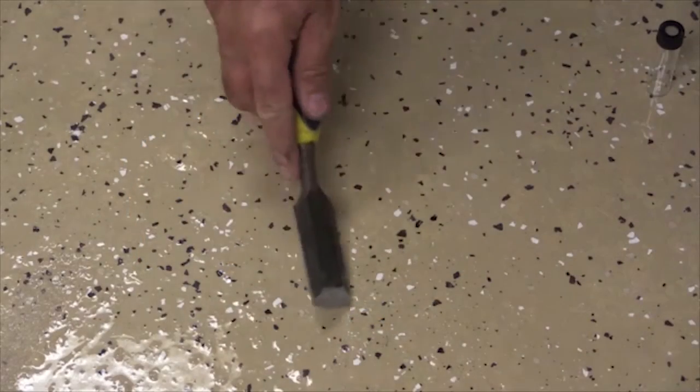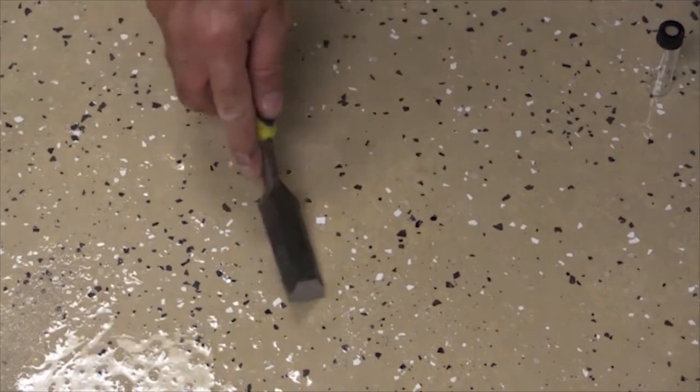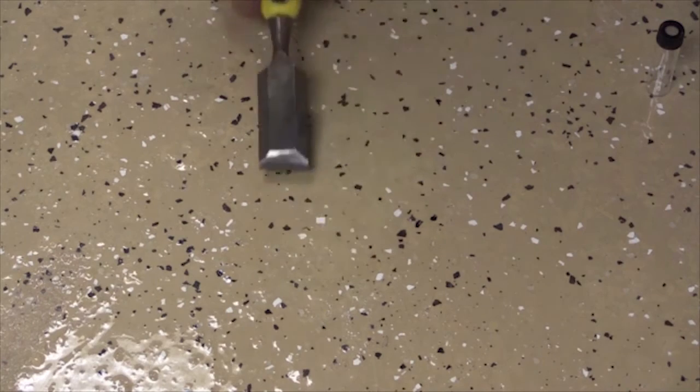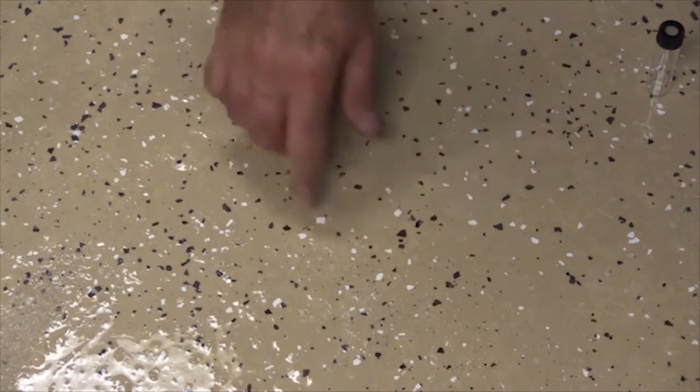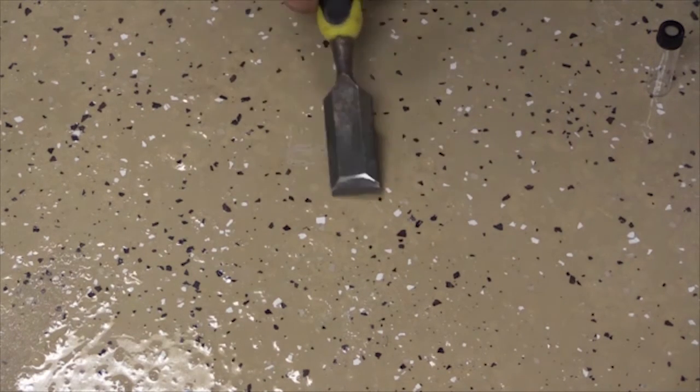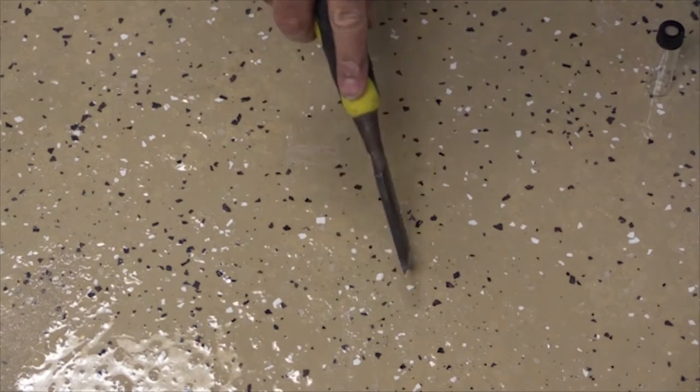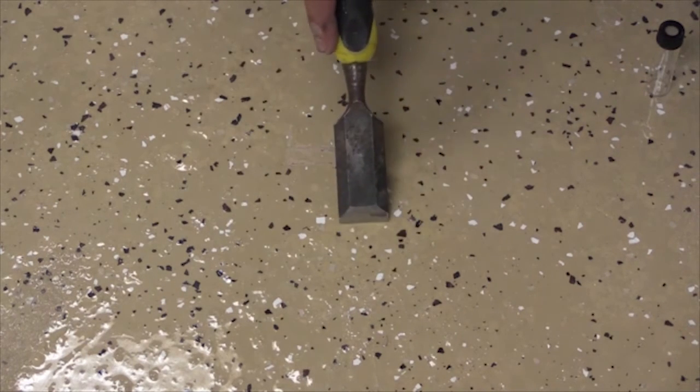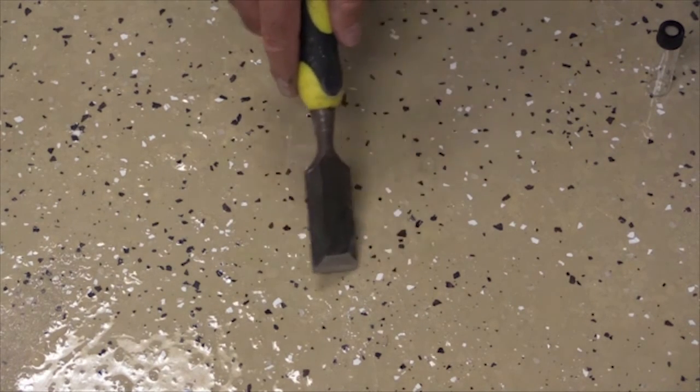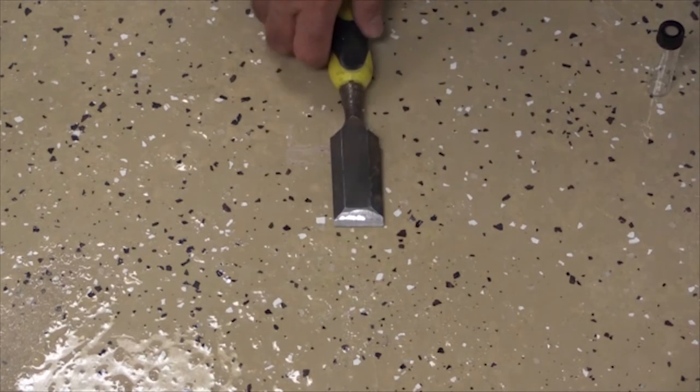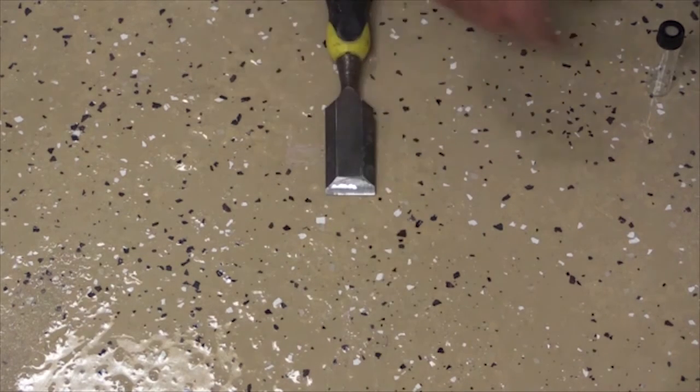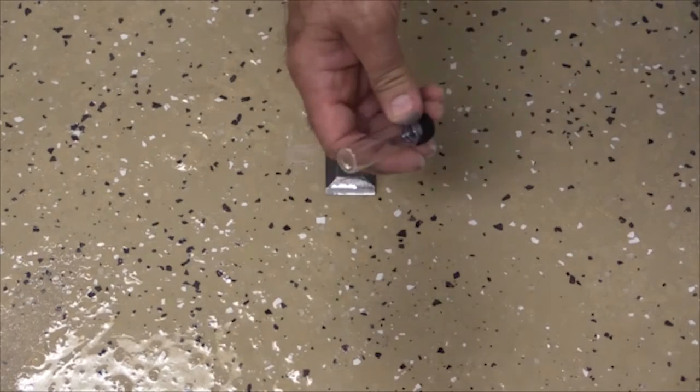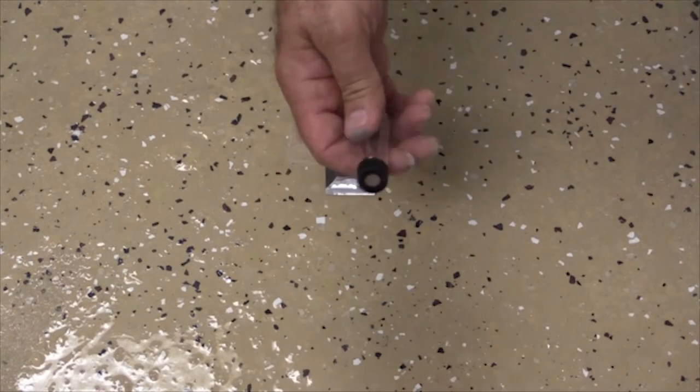What we have here is we have a blistered area on a coating system, and we want to sample the coating system in the blistered area. We suspect that maybe there's some solvent entrapped in one of those coating layers below. So what we're going to do is we're going to take our sample using a sharp chisel, and immediately when we cut our sample out, we're going to put it into this septum cap vial.